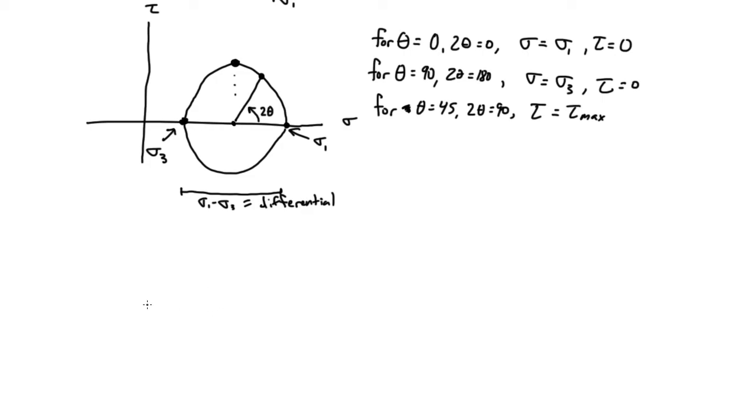When we're thinking about the Mohr circle, I want to have that connection to the real world. So think about sigma 1 acting down, sigma 3 vertical, and then some plane.